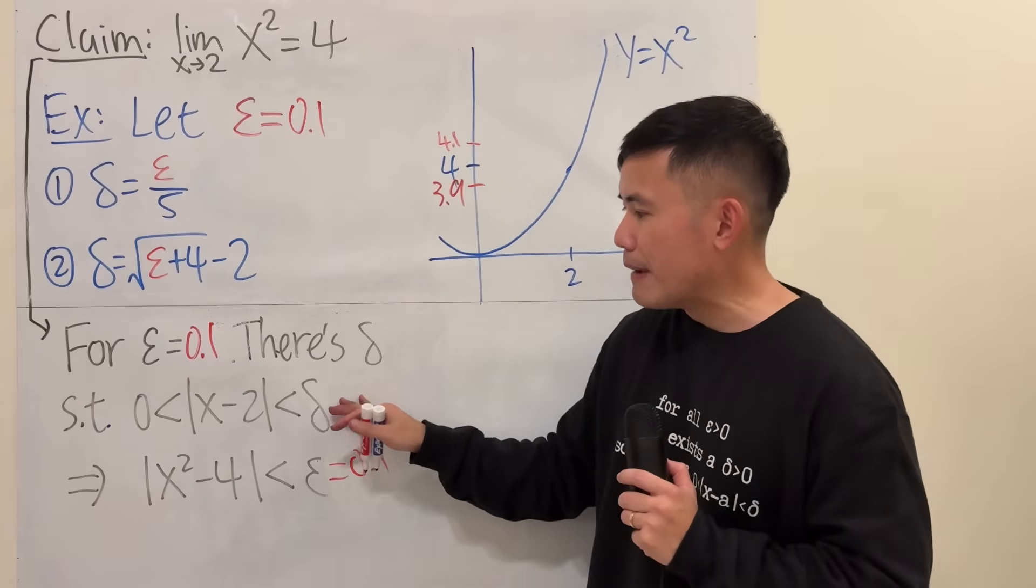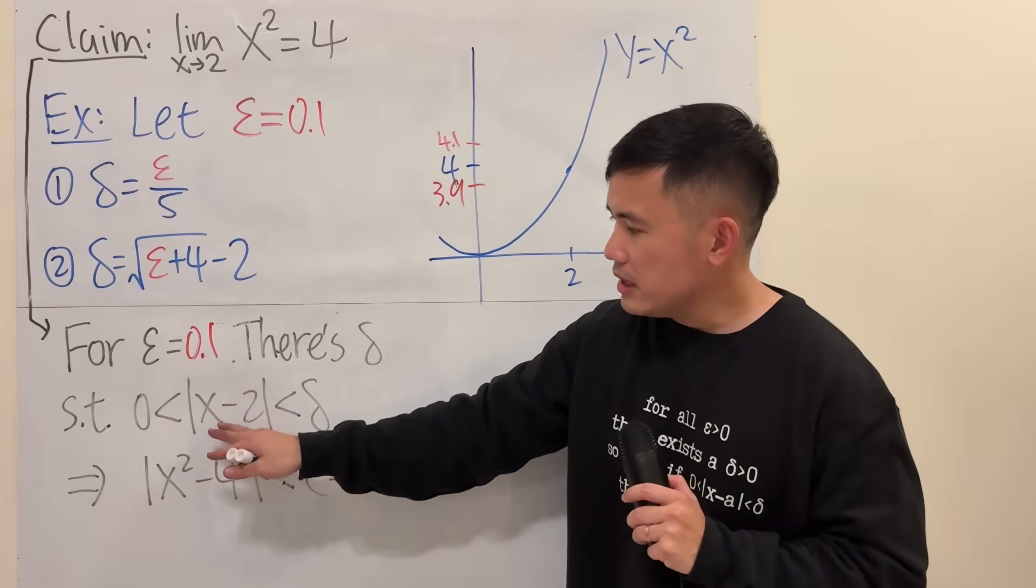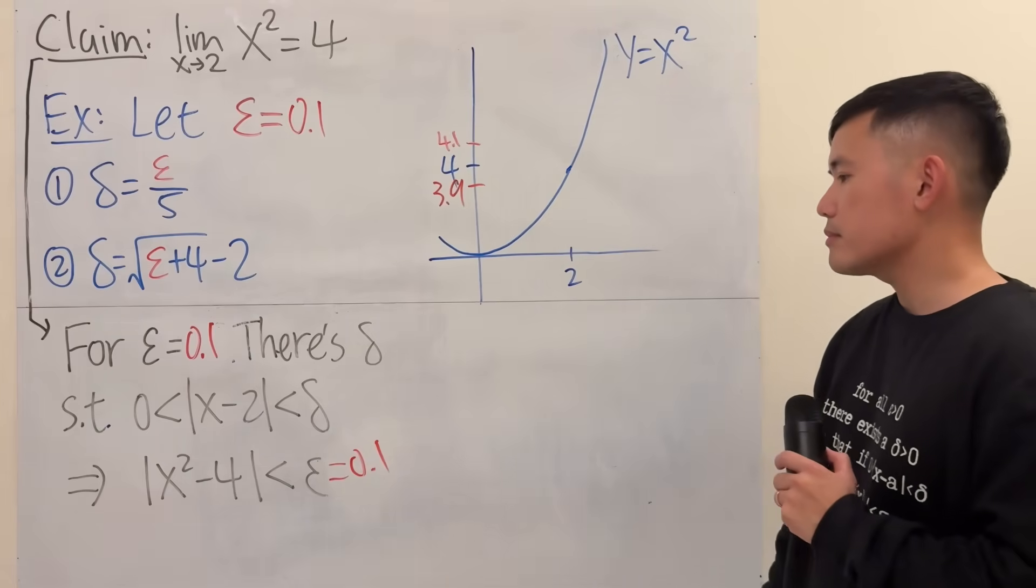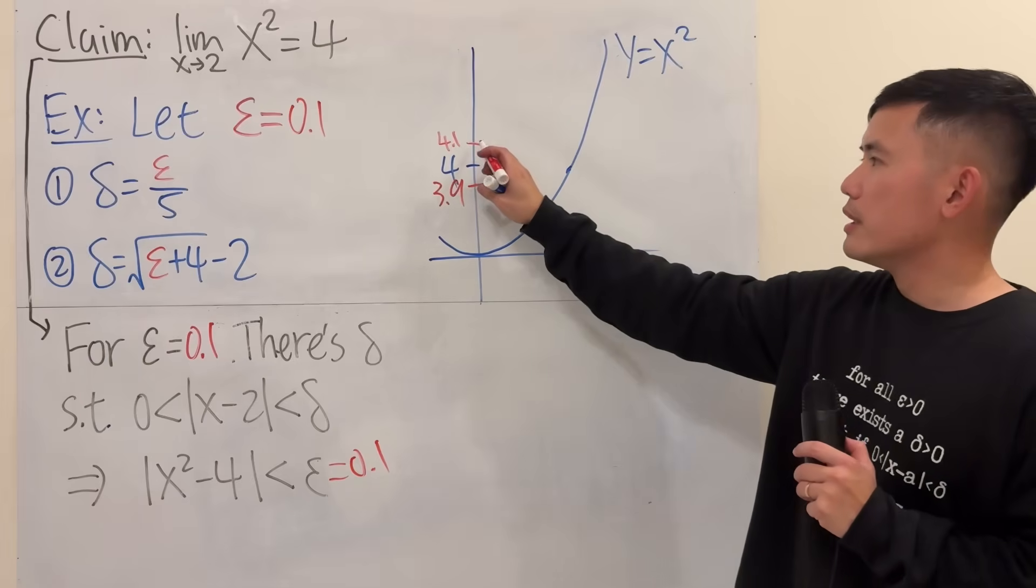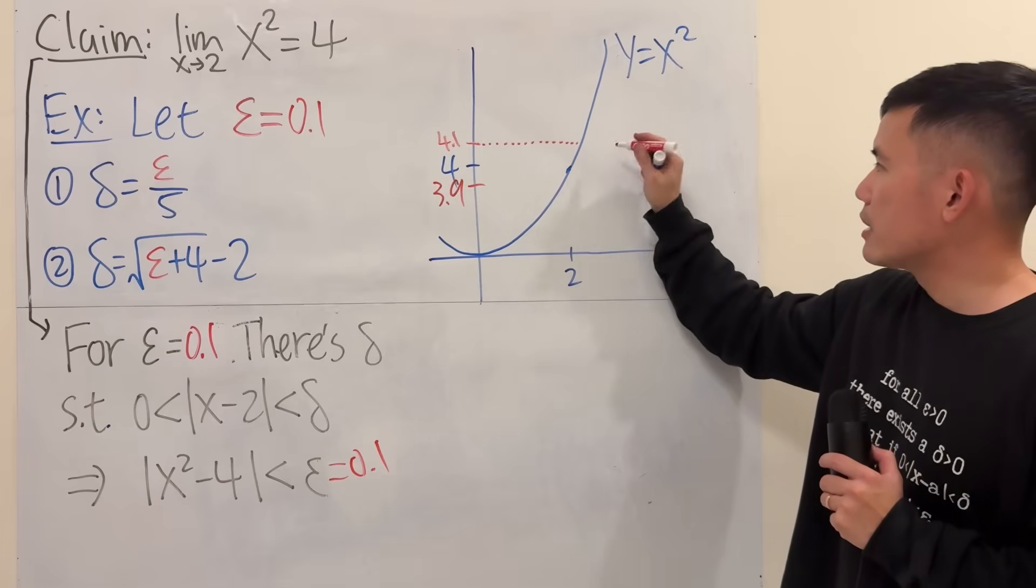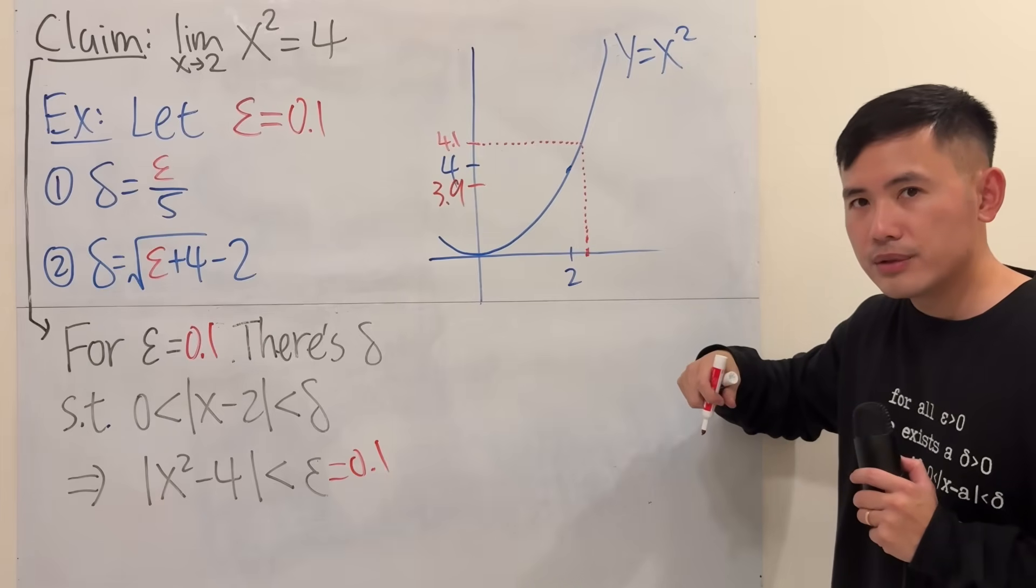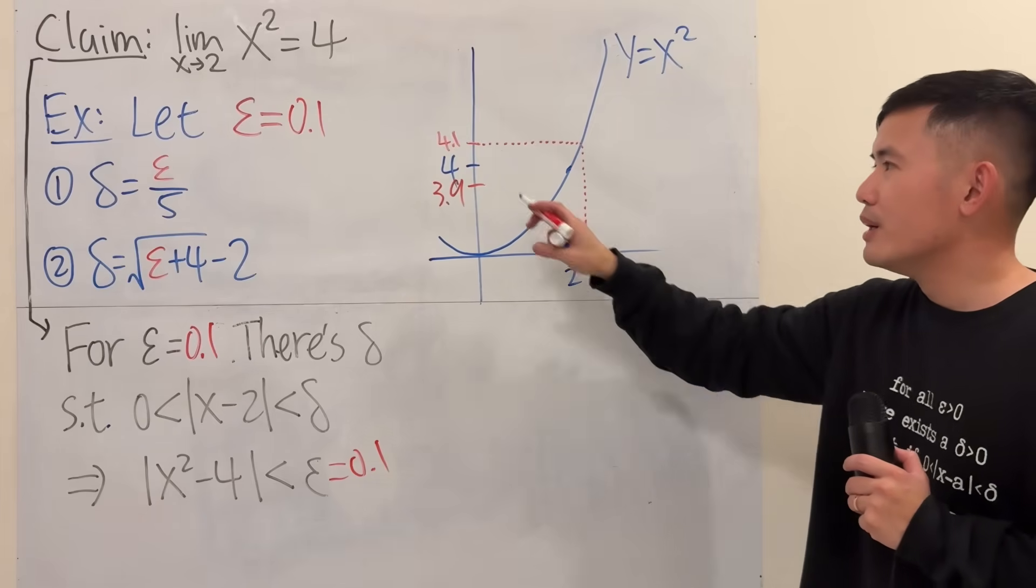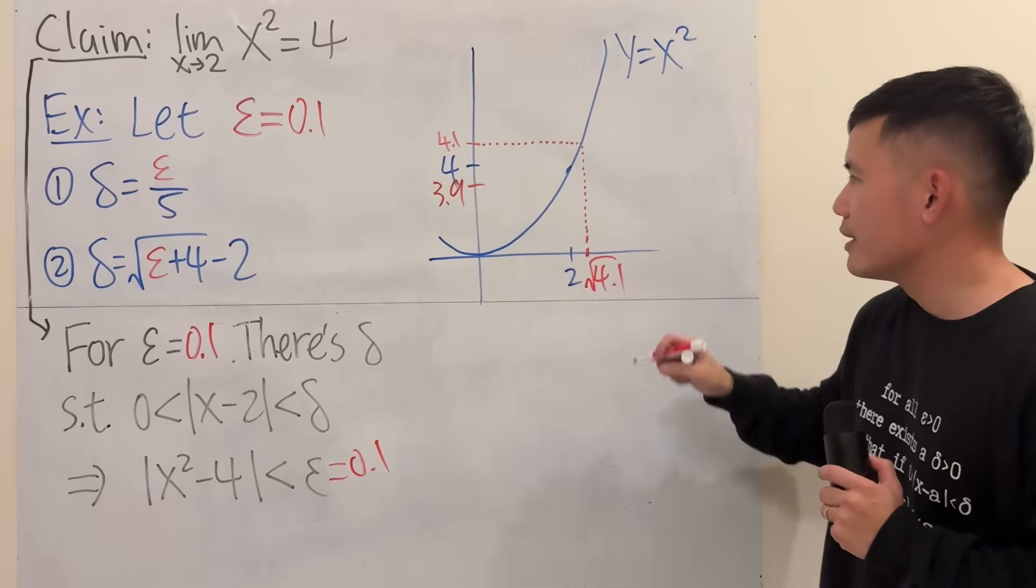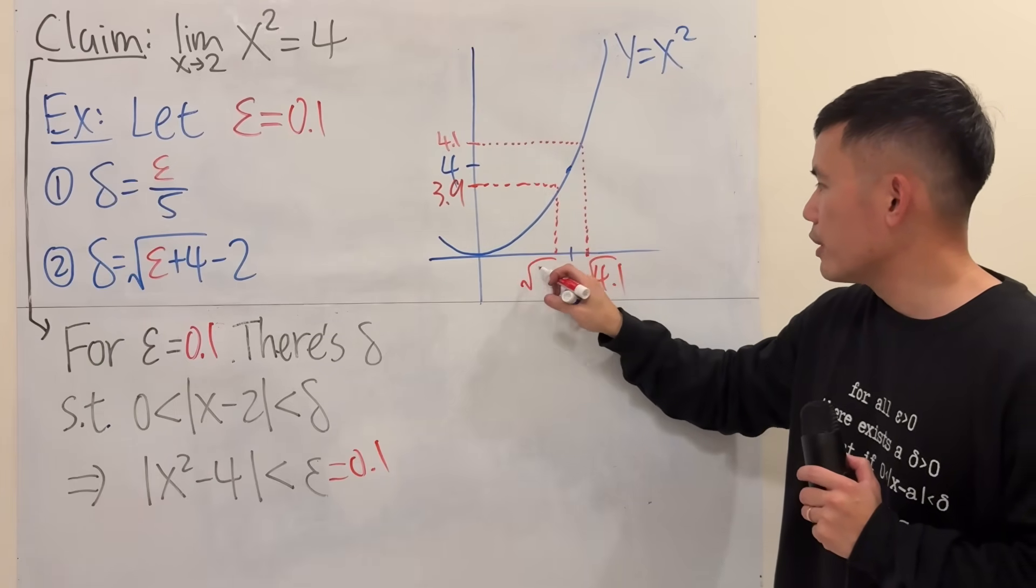Then, we are going to look back here. Here, this says, as long as the x is within the delta distance away from 2, then this will happen. So, we are talking about the x values. This is how we are going to do it. Start with 4.1, and just kind of come back here, hit the curve, and then go down so you can see the x value right here. And now, let me ask you, what's the x right here? Well, the y is 4.1, solve for x from here, take the square root. So, this will be square root of 4.1. Do the same thing here. That will be square root of 3.9.